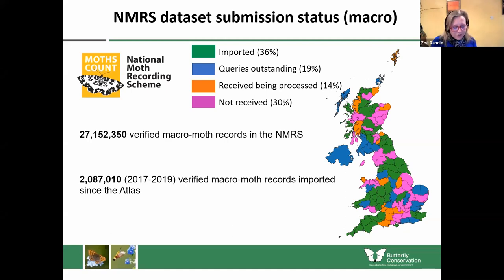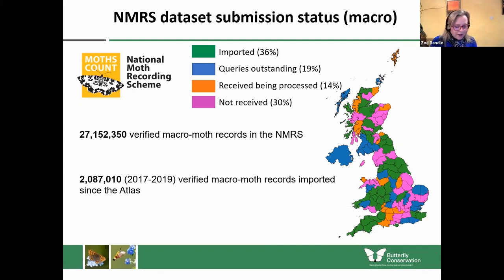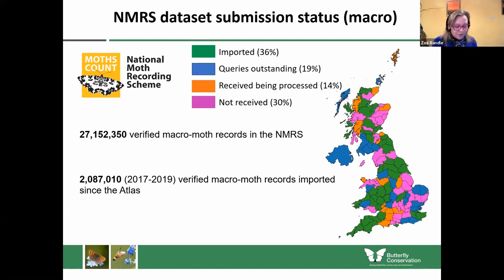We're currently collating data for a three-year period — 2017, 2018, and 2019 — so Les really has got his work cut out. The map shows the different status of datasets: 36% have been imported, there are outstanding queries for 19%, 14% have been received and are being processed, and 30% have not yet been received. I will be on the phone chasing those datasets in due course. This map was correct as of 26th January, and we received the Cumbria and Westmoreland data the following day. Thank you to all county recorders that have got their data in, and of course to all the recorders who submit their data to the National Moth Recording Scheme.